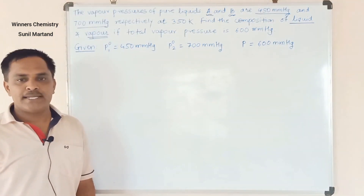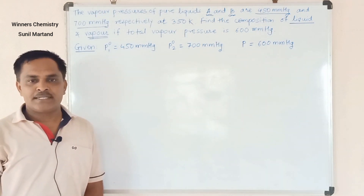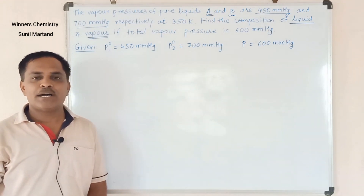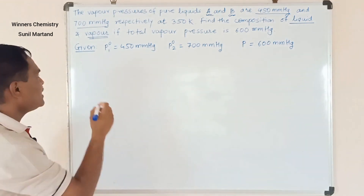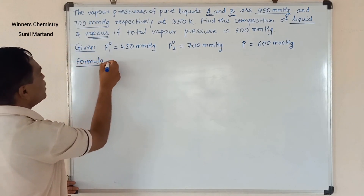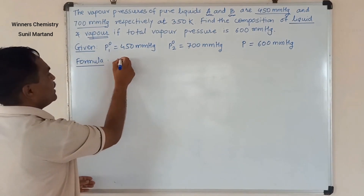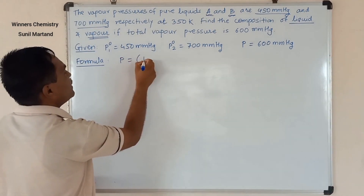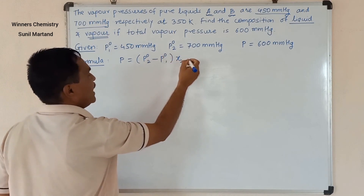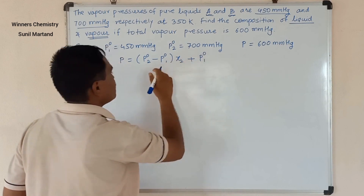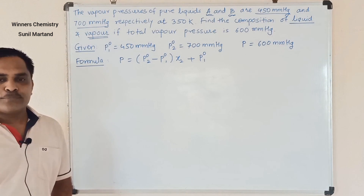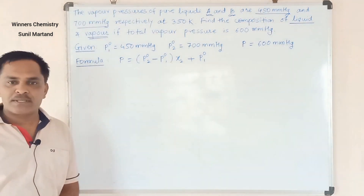In order to calculate the composition of the liquid state, we require the formula from Raoult's law, which we studied in our previous lecture. The formula is: total pressure P equals P°2 minus P°1 multiplied by x2, plus P°1. This is the formula for Raoult's law.